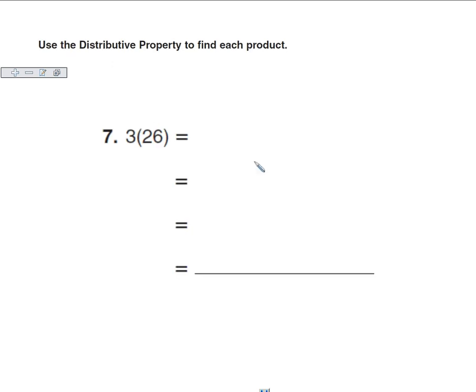So now we're being asked to use the distributive property to find each product. 3 times 26. That's the same as 3 times this 2, that's a 20, 3 times 2 tens or 20, plus 3 times 6.